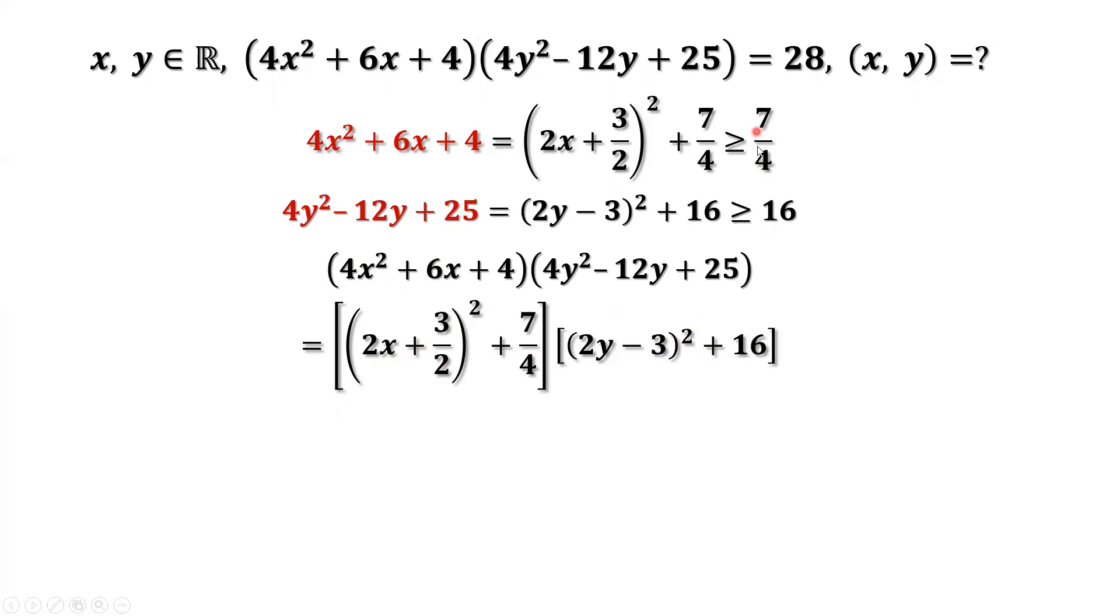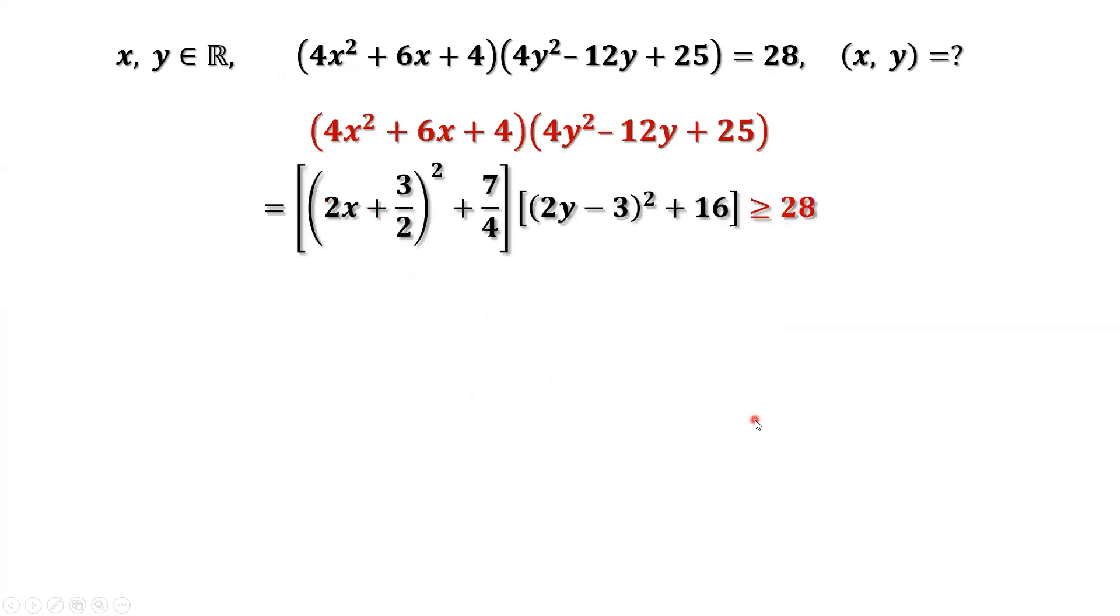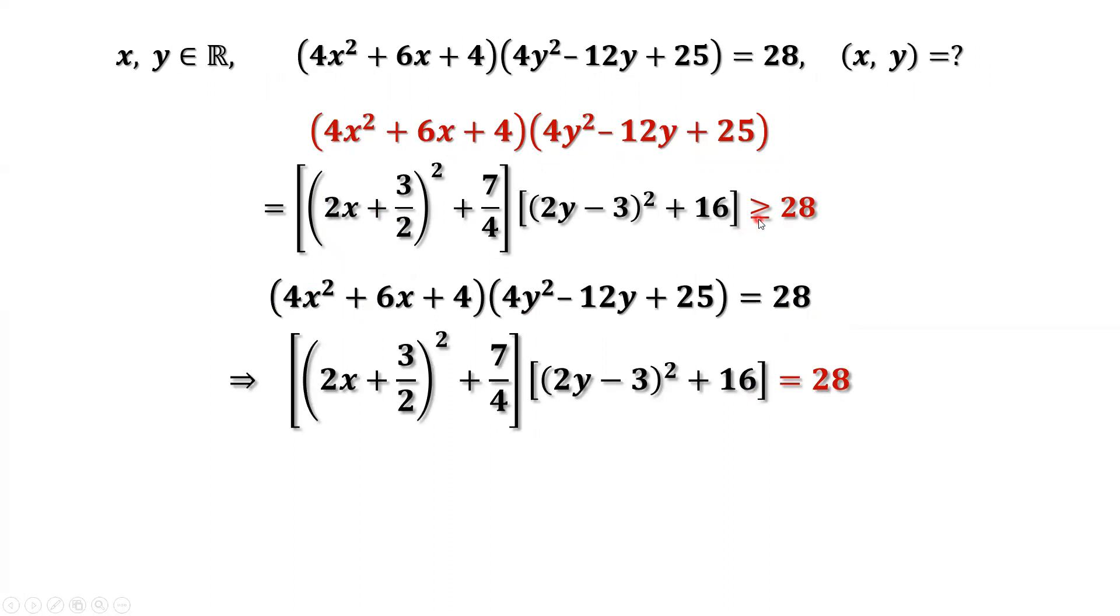Use these two inequality results. This product is bigger than or equal to 7 over 4 times 16, which is 28. From the given condition, the product is 28. This means this inequality when the equal sign holds.